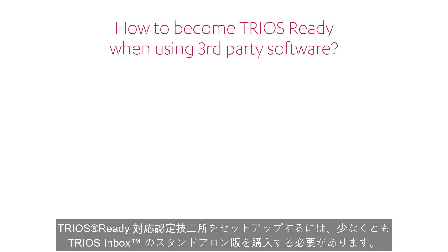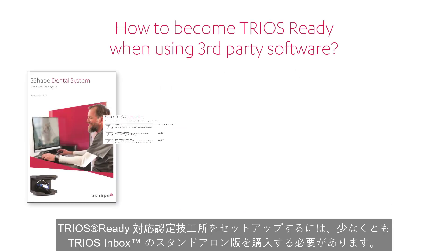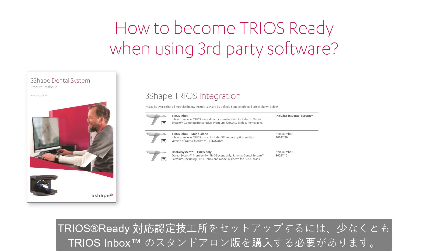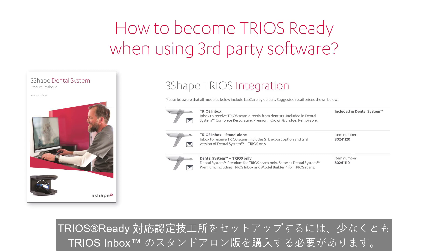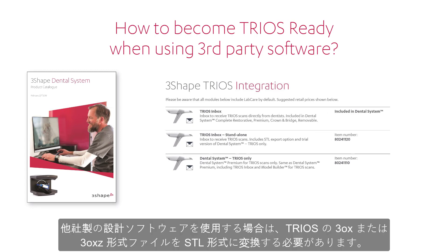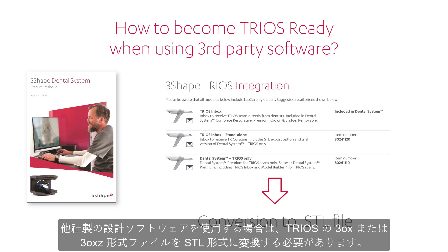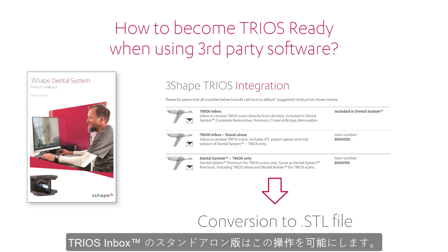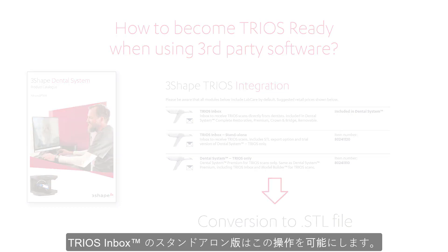In order to become Trios Ready, you have to buy at least the Trios Inbox Standalone version. When using third-party design software, you'll need to convert a Trios 3.0x or a 3.0xz file into an STL format. The Trios Inbox Standalone enables this operation.